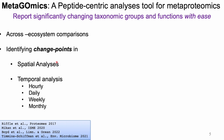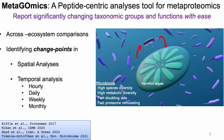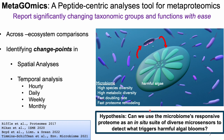In addition to developing methods in our lab, we focus on time series in the ocean. We're currently using the technology to track the bacterial community in a bay that's plagued by a harmful algal bloom. Previous research has demonstrated that phytoplankton and bacteria are constantly interacting, exchanging chemicals and metabolites. We're leveraging several fundamental microbiome principles — species and metabolic diversity and their fast proteome remodeling — to test our hypothesis: can we use the microbiome's responsive proteome as an in-situ suite of diverse microsensors to detect what triggers harmful algal blooms?